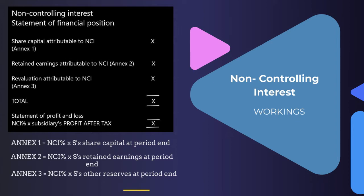For the statement of profit and loss, we take the non-controlling interest percentage of that subsidiary's profit after tax. So if the parent owns 60%, to work out the element not attributable to the parent — which relates to other shareholders — we would take 40% times whatever the profit after tax was in that subsidiary.